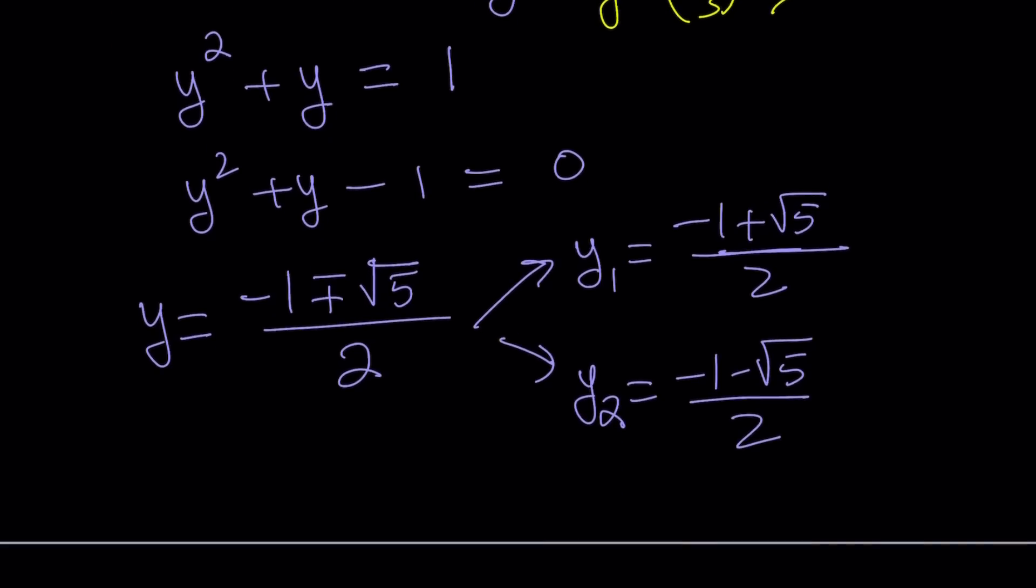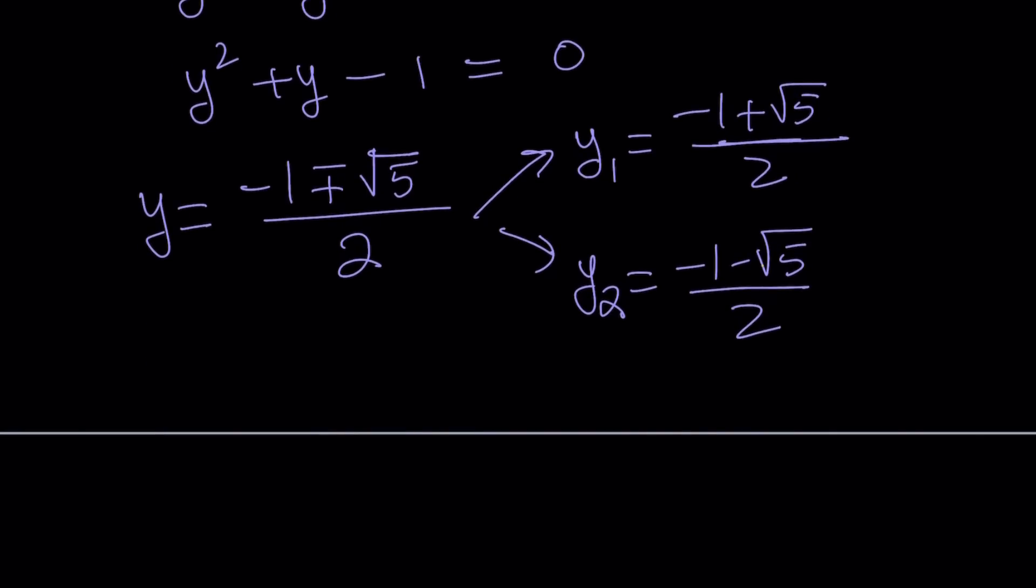Negative 1 minus root 5 over 2 is less than 0. You're subtracting a positive number from a negative number, so it's getting even smaller. So y2 is not acceptable.